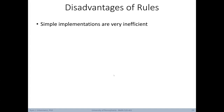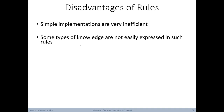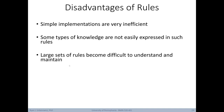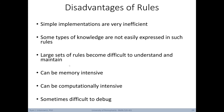Now the disadvantages of rules: simple implementations are often very inefficient — we can modularize too much, making execution computationally expensive during searching, matching, and inference. Some types of knowledge are not easily expressed as rules. A large set of rules can become difficult to understand and maintain. Rule-based systems can be memory-intensive and computationally expensive. And they can still be difficult to debug when rules have important interactions between them that influence the validity of inferences made by the system as a whole.